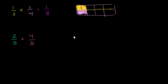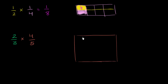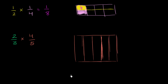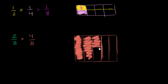Let's think about this — let's represent 4/5. If I have a whole like this, let me try to divide it into five equal sections. I'm trying my best to make them look like equal sections. And we want four fifths, so we want four of these five equal sections. So that right over there is 4/5.